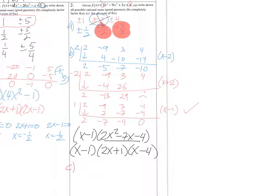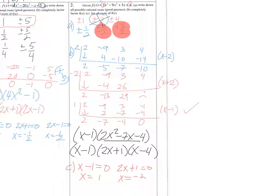Part C — we've got to find our zeros. We're going to set each parenthesis equal to 0. That means x equals 1. 2x plus 1 equals 0, so x equals negative 1 half. And x minus 4 equals 0, so x equals 4.